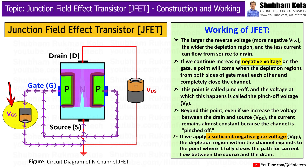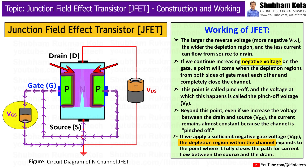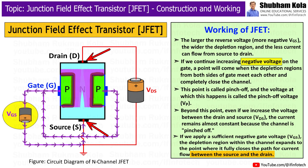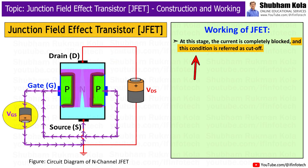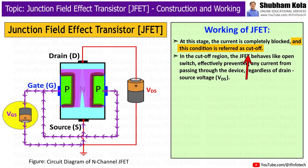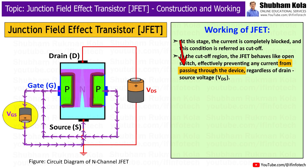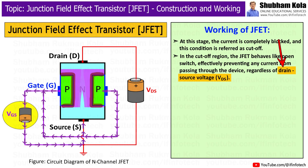If we apply a sufficient negative Vgs, the depletion region within the channel expands to the point where it fully closes the path for current flow between the source and the drain. At this stage, the current is completely blocked, and this condition is referred to as the cut-off region. In the cut-off region, the JFET behaves like an open switch, effectively preventing any current from passing through the device regardless of drain-source voltage VDS.